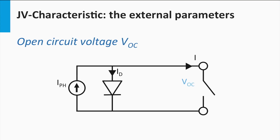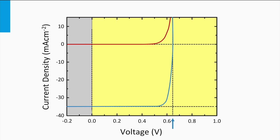Let's consider that the terminals of an illuminated solar cell are not connected. This situation is called an open circuit. In open circuit, the solar cell does not produce any current and solely produces a voltage. This voltage is called the open circuit voltage, and it is easily recognized in the JV plot by the intersection of the JV curve with the horizontal axis, corresponding to a current density equal to zero.